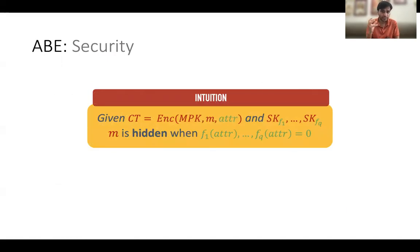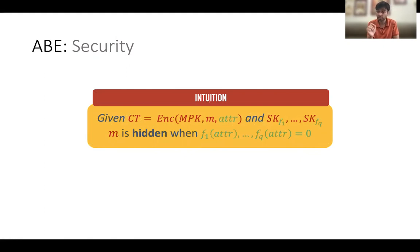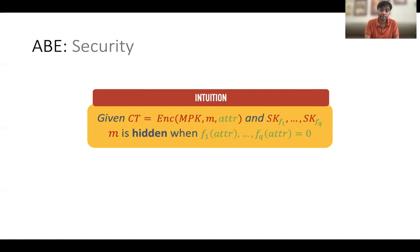Naturally, for security, the idea is as follows. Suppose I give you a ciphertext that encrypts a message m under a set of attributes, and you also have polynomially many secret keys for different functions f1, f2, and fq. Attribute-based encryption says the message m will be hidden as long as none of those policies — for which you have a secret key — satisfies the attributes. Because if some policy satisfies the attributes, then you can run the decryption algorithm and recover the message m. But if you don't have any of the authorized secret keys, then the message m should be hidden from you. This gives extreme power of fine-grained access of encrypted data, because now you can provide partial secret keys but also guarantee security in the presence of revealing certain partial secret keys.